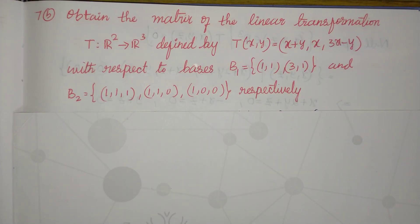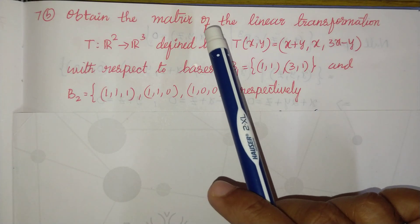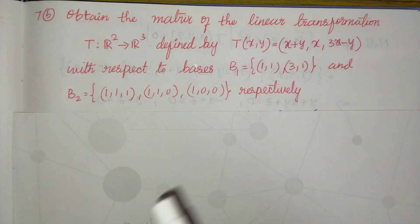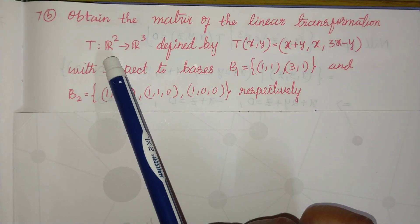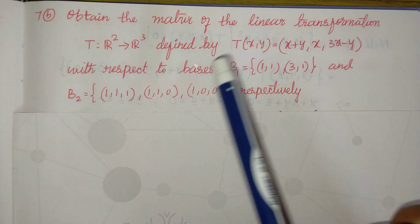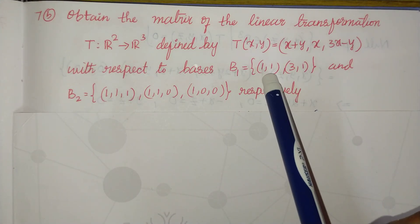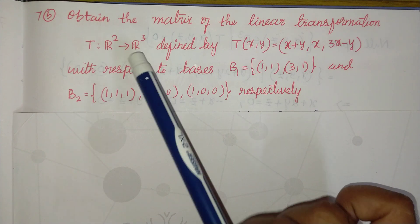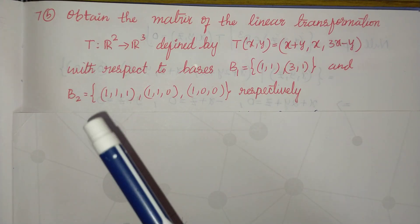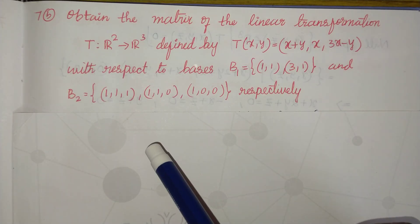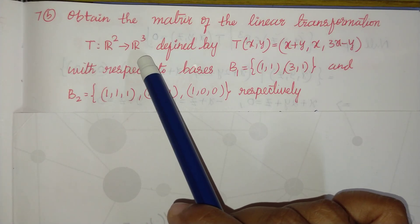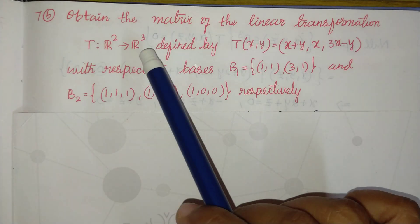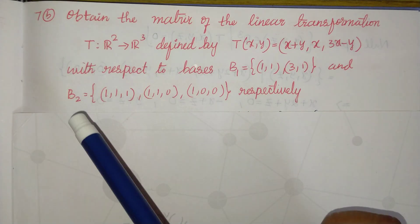In this class, let us solve a problem on linear transformation. We have to find the matrix of the linear transformation from R2 to R3. R2 is the domain and R3 is the co-domain. The basis for the domain is given as (1,1) and (3,1), and the basis for the co-domain R3 is (1,1,1), (1,1,0), and (1,0,0). The dimension of the domain is 2 and the co-domain is 3, so the matrix of this linear transformation will be 3×2.